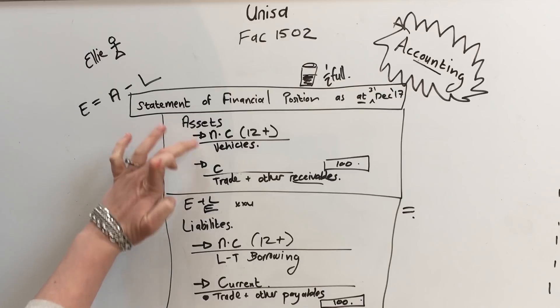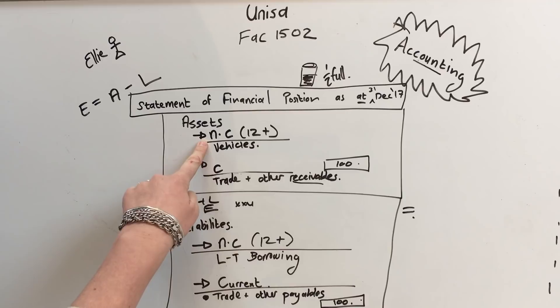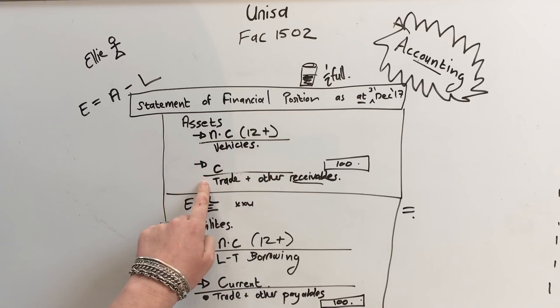It has a section that's non-current and current. Non-current means it's long term, 12 months plus. Current means it has to be realized in the next 12 months. So non-current and current.